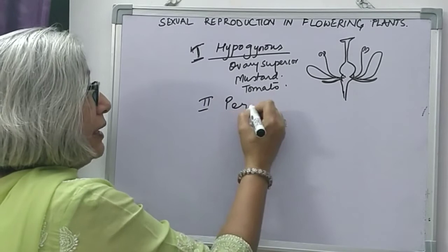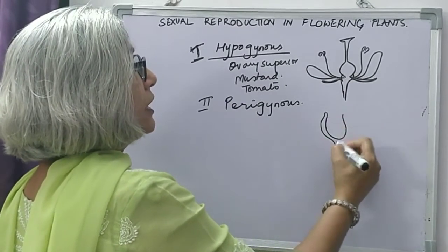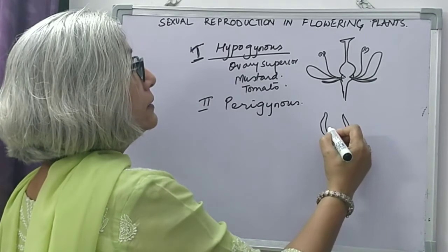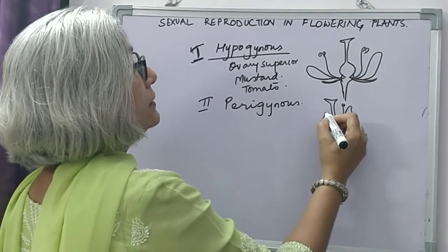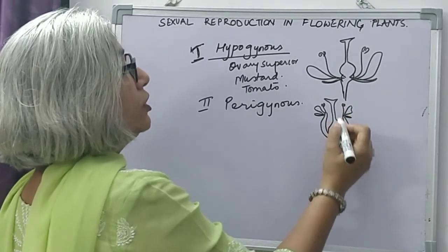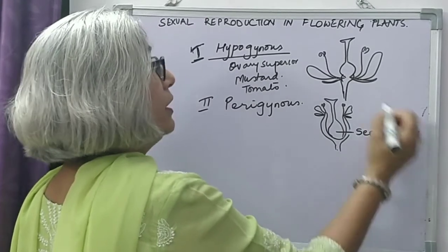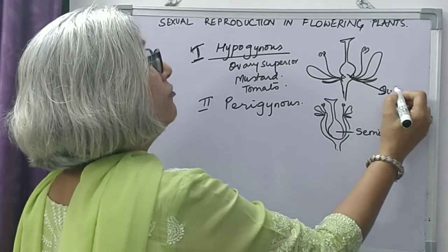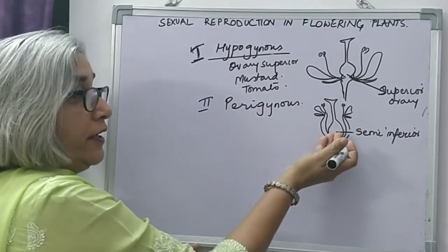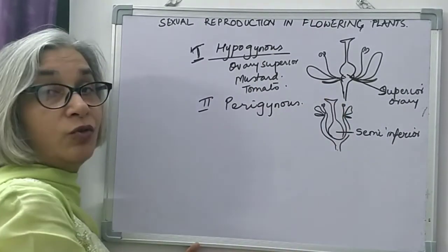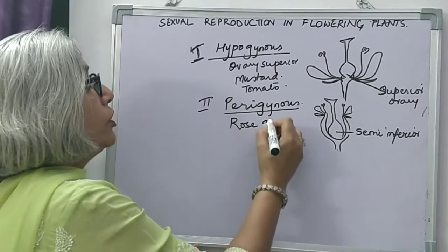The second is the perigynous condition, where the thalamus forms a cup-shaped structure. The other floral parts are on the rim of this cup. The ovary is not superior but not inferior either — so the ovary is called semi-inferior in this condition. In hypogynous the ovary was superior; here it is half inside and half outside, so it is semi-inferior in perigynous. This we see in rose and strawberry.